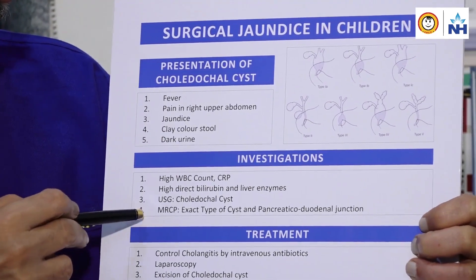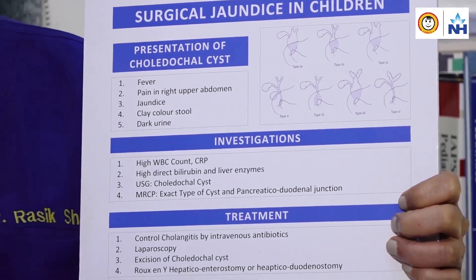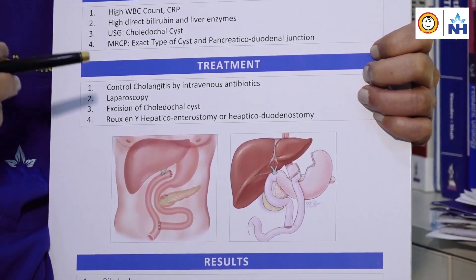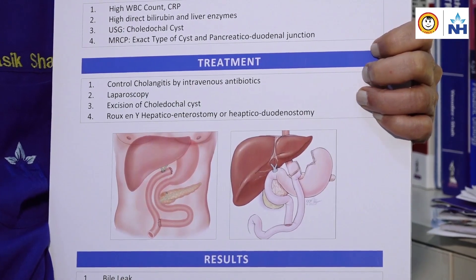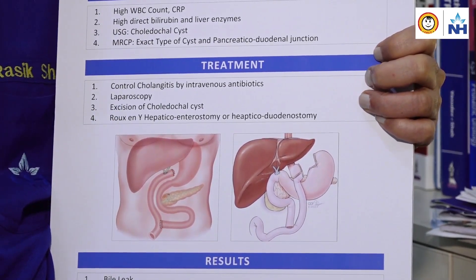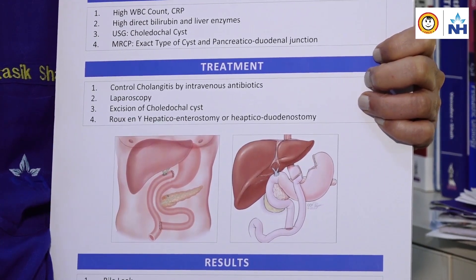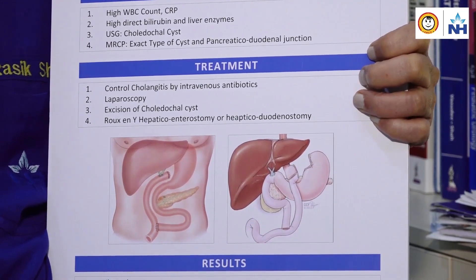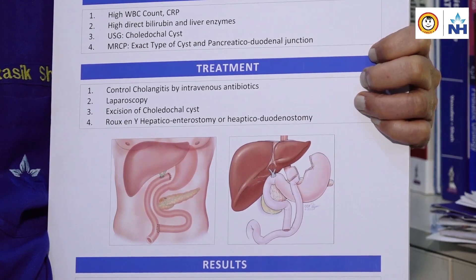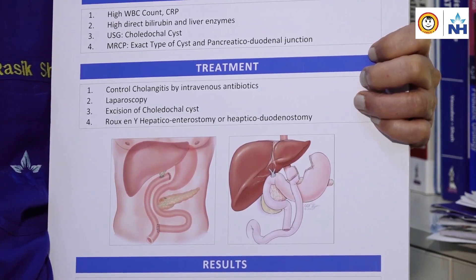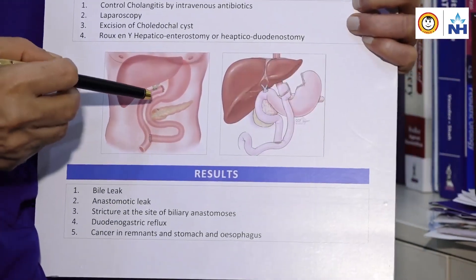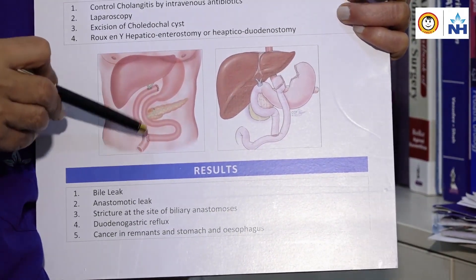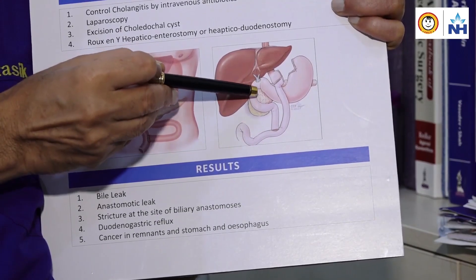Once the diagnosis is confirmed, the infection is controlled with antibiotics. After infection control, we proceed with surgery, done laparoscopically today. We excise the dilated duct or choledochal cyst and perform anastomosis of the common hepatic duct with the bowel — either with the duodenum or using a Roux-en-Y loop with the small bowel.